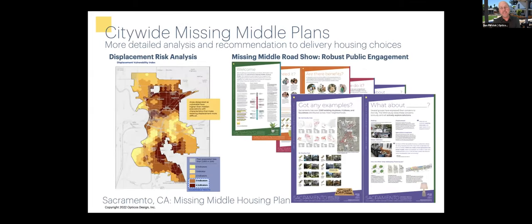We've also been working on some missing middle plans. This is really exciting — some images from the Sacramento citywide missing middle plan. A really critical piece that the city prioritized, which we're really excited about, is a displacement risk analysis. On the right are some of the posters we established for a robust public engagement strategy as part of that plan.